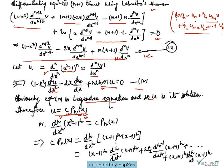So since u = c·Pn(x) is the solution, we have d^n/dx^n of (x²-1)^n = c·Pn(x). Now writing (x²-1)^n as (x+1)^n·(x-1)^n and applying the Leibniz theorem, we expand: (x-1)^n · d^n/dx^n (x+1)^n plus nC1 · d^(n-1)/dx^(n-1) (x+1)^n plus dot dot dot.